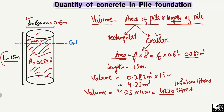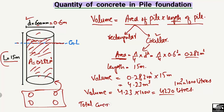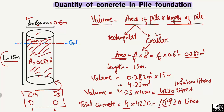Now, if you have a pile cap with 4 piles — pile 1, 2, 3, and 4 — all with the same dimensions (15 meter length and 0.6 meter diameter), you can calculate the total concrete for all 4 piles by multiplying 4 × 4,230 liters, which comes out to 16,920 liters of concrete for the 4 piles with the same dimensional properties.